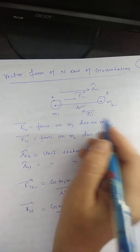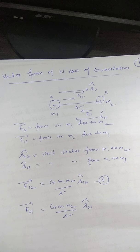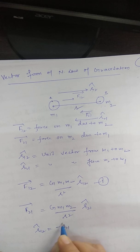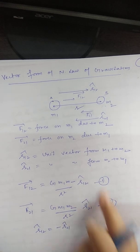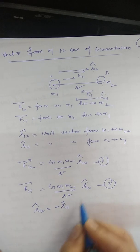Now r12 cap is equal and opposite to r21 cap. These two are unit vectors having magnitude 1 and direction opposite. Put this value in equation number 1.